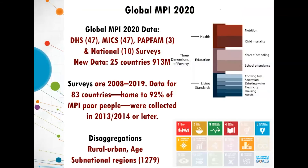In 2020, we cover 107 countries using DHS and MICS data — demographic and health surveys and multiple indicator cluster surveys — for 47 countries each, PAPFAM for three, national surveys for ten, and we've updated this for 25 countries and 913 million people. The data are from 2008 to 2019, but 92% of the MPI poor people living in 83 countries have data collected in 2013–14 or later. We remain very grateful to survey providers, because without good quality disaggregated data, it would be impossible to do this work.